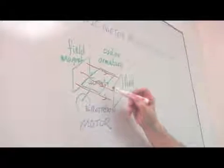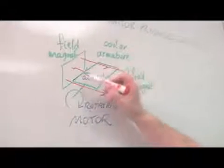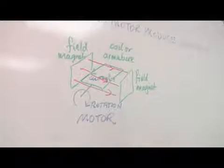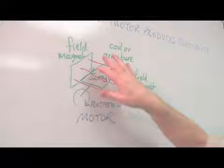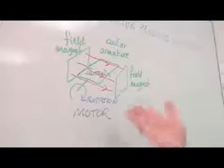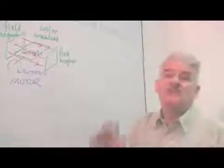Now, if I pass electric current through the wire, I get another magnetic field, and I get a reaction between the two magnetic fields, which makes this rotate. Now, I have to do something special to the current to make it rotate, but it rotates.